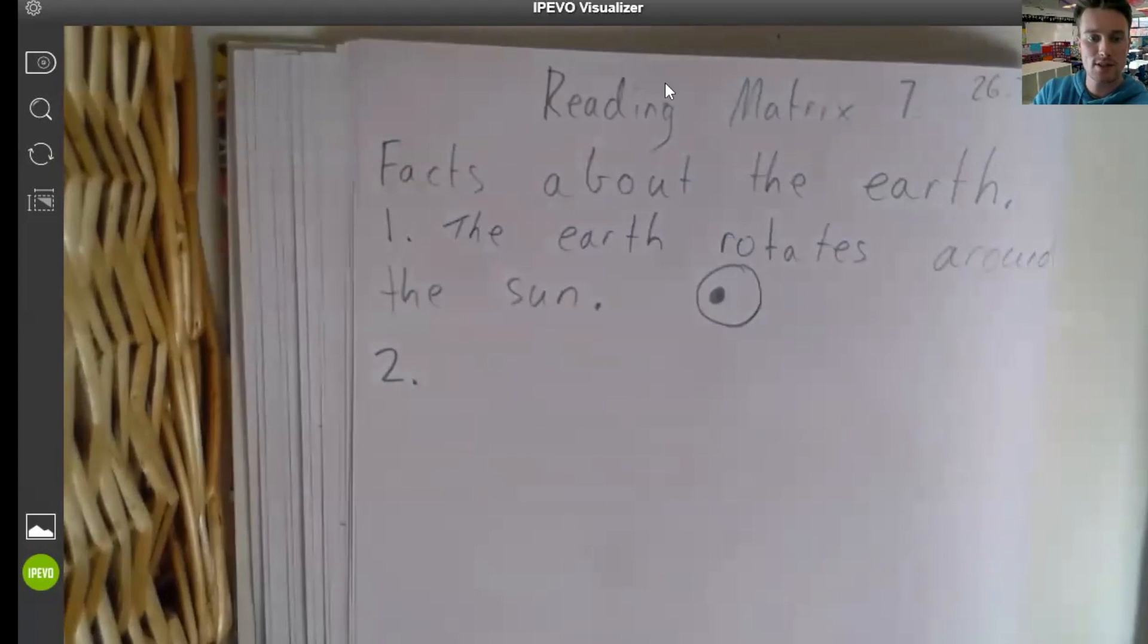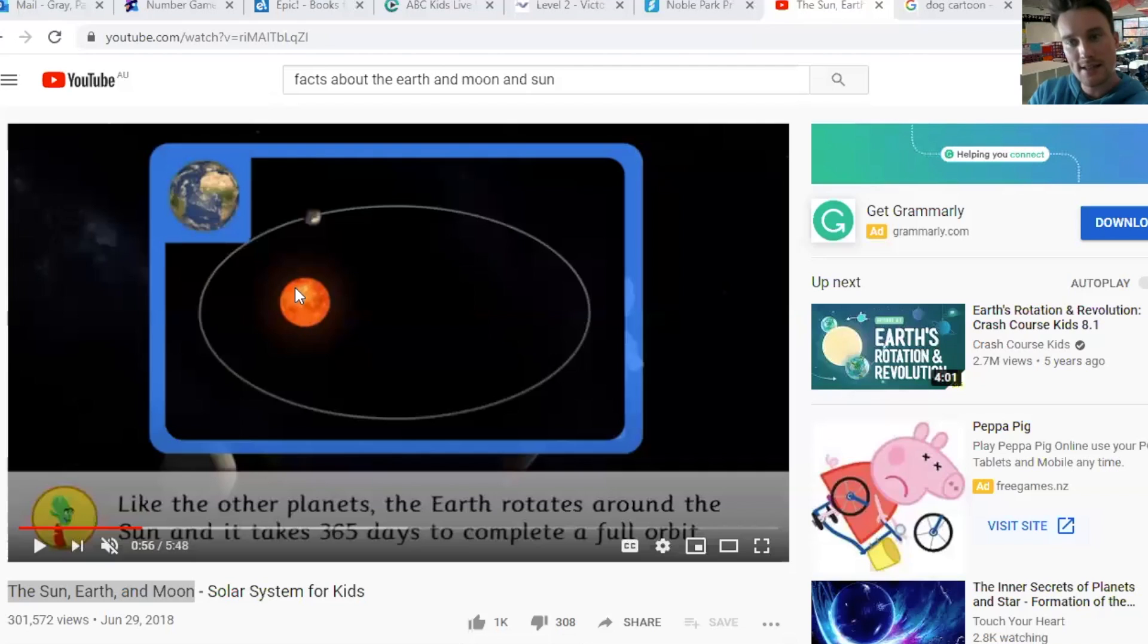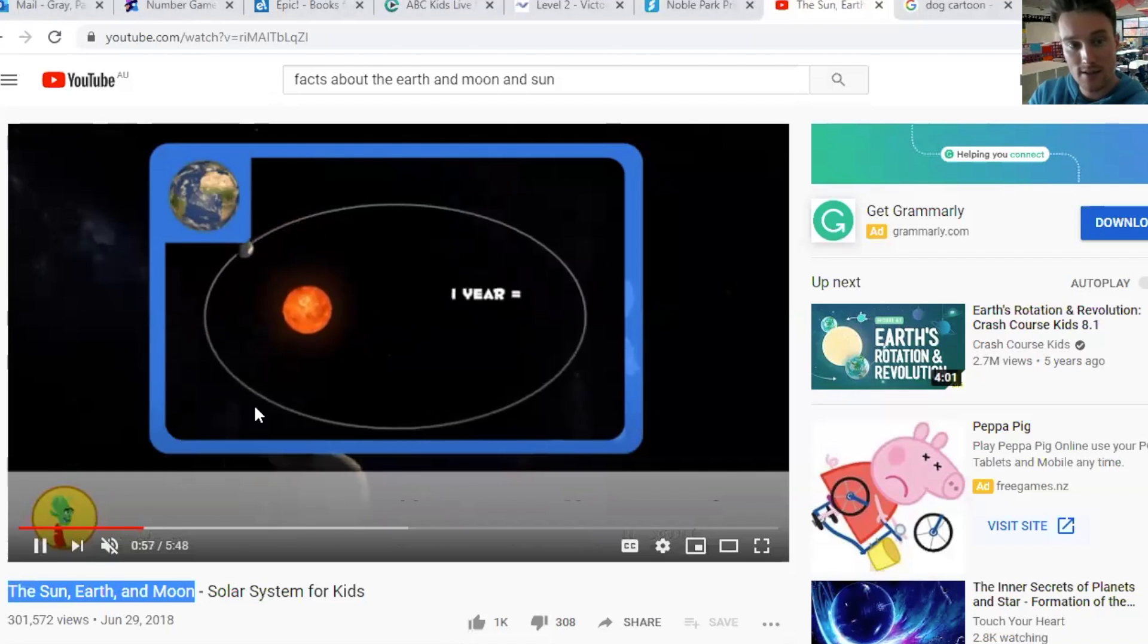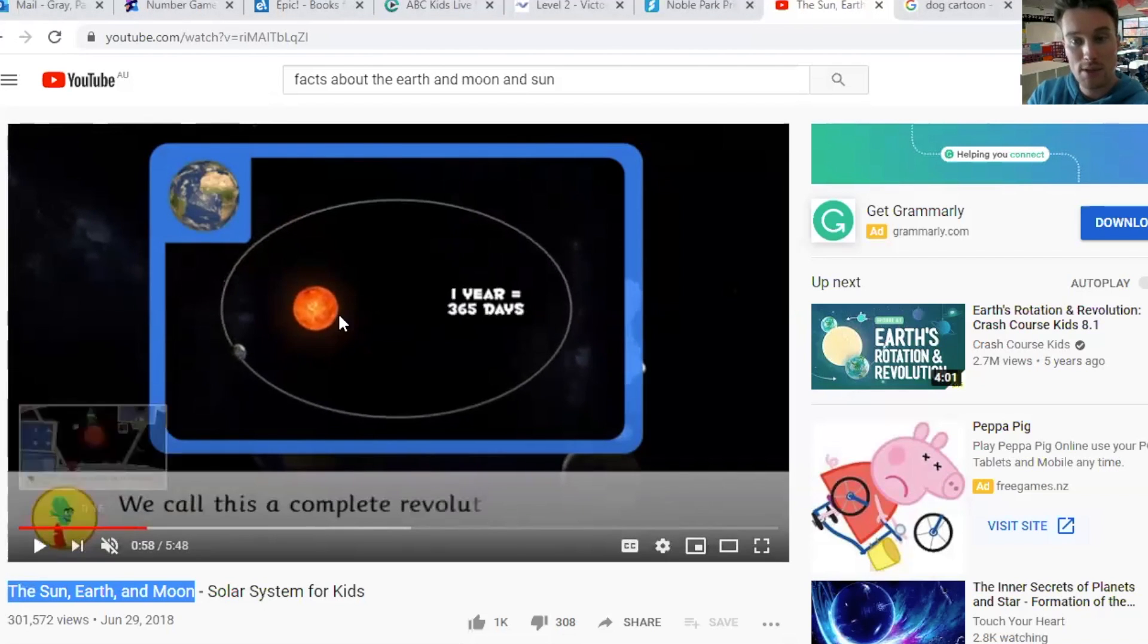This is a really interesting thing to think about. If you have a look at the picture, does it look like the sun is in the middle? No, it's off to one side. And that's why some parts of the year are hotter than others. Because the earth gets closer to the sun during the hotter months. And then when it gets further away, well, it gets colder. And that's why we have winter. So that was fact number one.